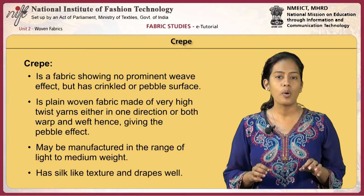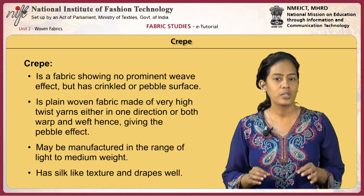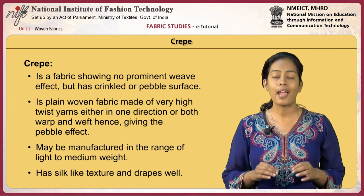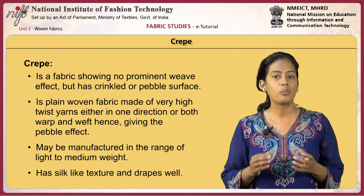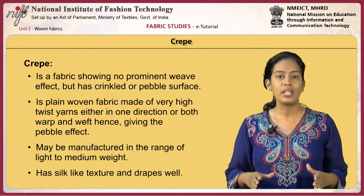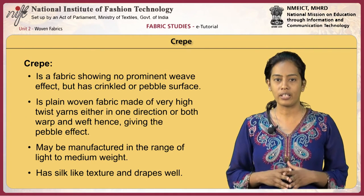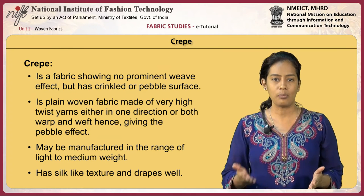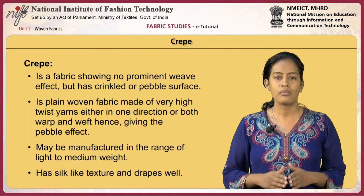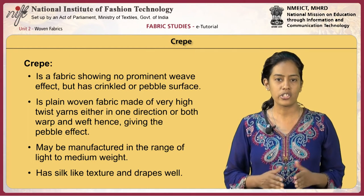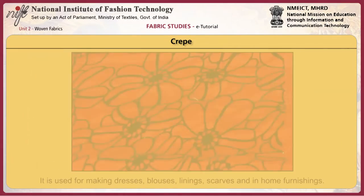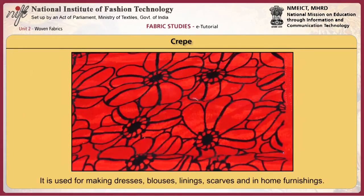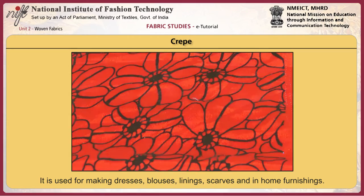Crepe is a fabric showing no prominent weave effect but has a crinkled or pebble surface. It is a plain woven fabric made of very high twist yarns, either in one direction or both warp and weft, giving the pebble effect. It may be manufactured in the range of light to medium weight. The fabric has a silk-like texture and drapes well. It is used for making dresses, blouses, linings, scarves and home furnishings.